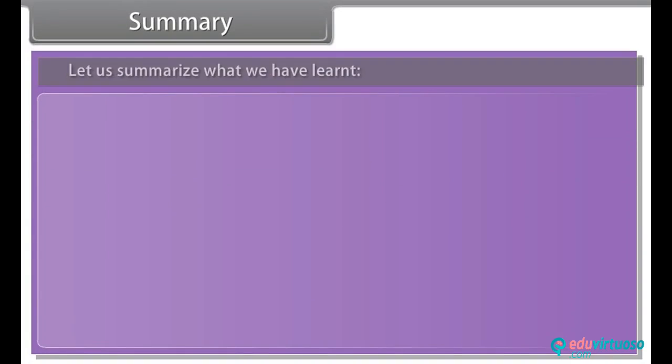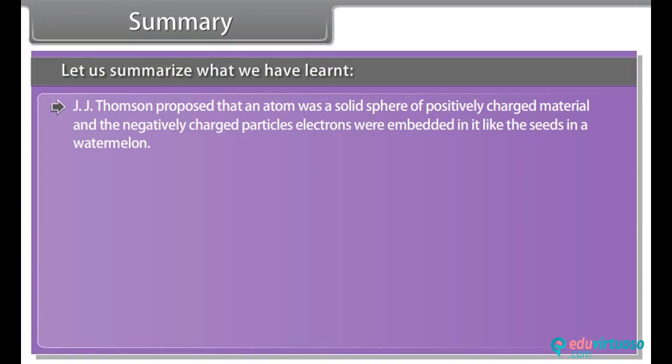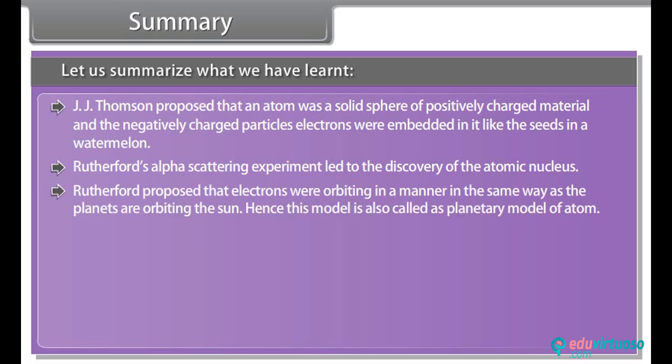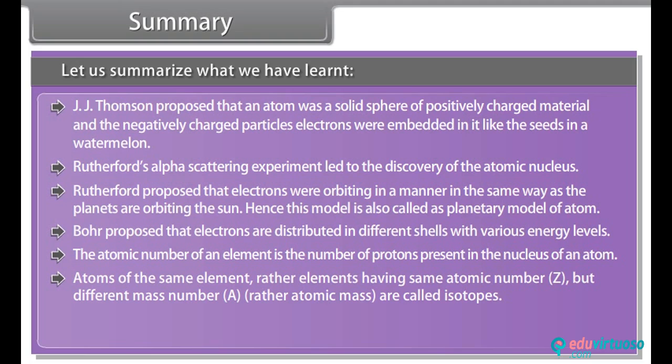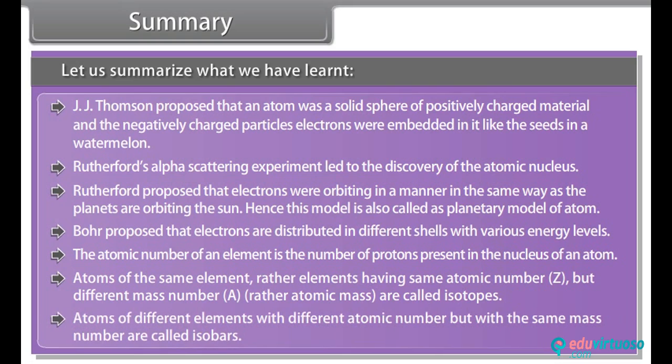Summary. Let us summarize what we have learned. J.J. Thompson proposed that an atom was a solid sphere of positively charged material and the negatively charged particles' electrons were embedded in it like the seeds in a watermelon. Rutherford's alpha scattering experiment led to the discovery of the atomic nucleus. Rutherford proposed that electrons were orbiting in a manner in the same way as the planets are orbiting the sun. Hence, this model is also called as planetary model of atom. Bohr proposed that electrons are distributed in different shells with various energy levels. The atomic number of an element is the number of protons present in the nucleus of an atom. Atoms of the same element rather elements having same atomic number Z but different mass number A rather atomic mass are called isotopes. Atoms of different elements with different atomic number but with the same mass number are called isobars.